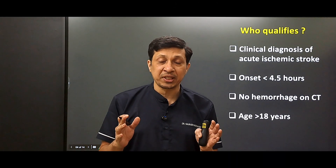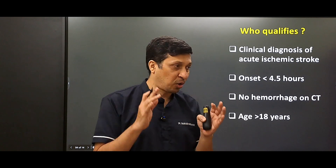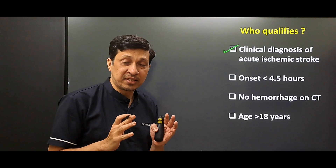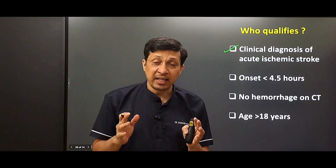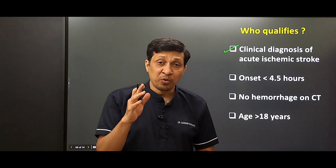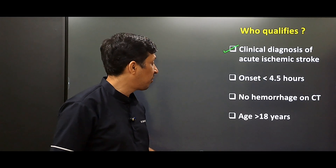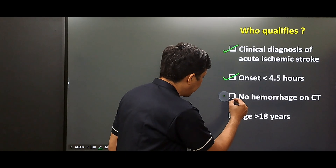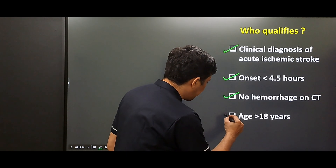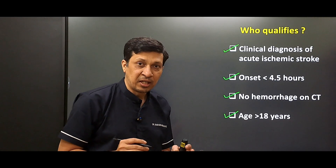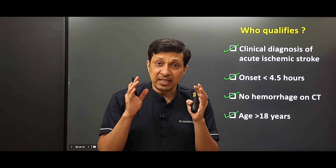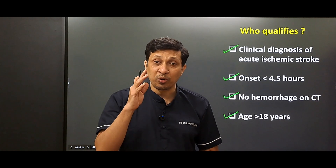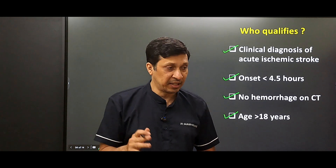Which patients qualify for stroke thrombolysis? First, there must be a clinical diagnosis of acute ischemic stroke. Second, the patient must arrive within 4.5 hours of symptom onset. Third, there should be no hemorrhage on CT scan. Fourth, the patient's age must be more than 18 years. Only after confirming these criteria can you proceed, but you must also exclude contraindications.